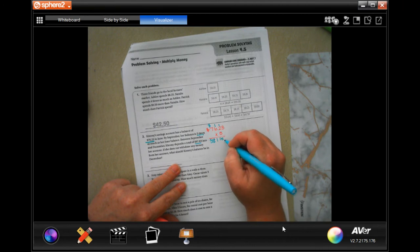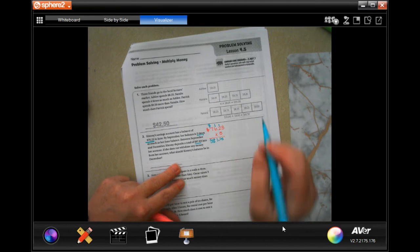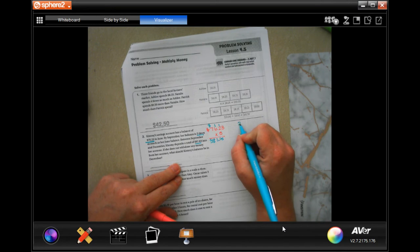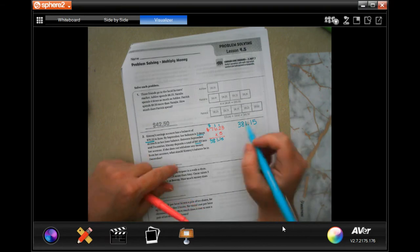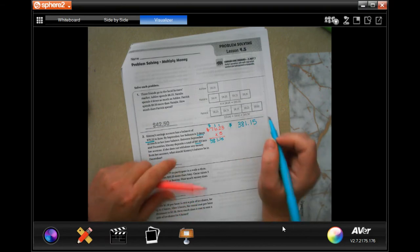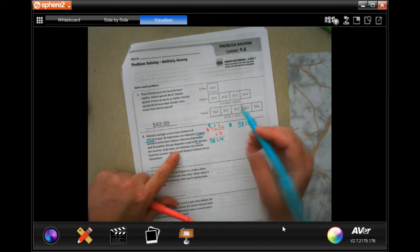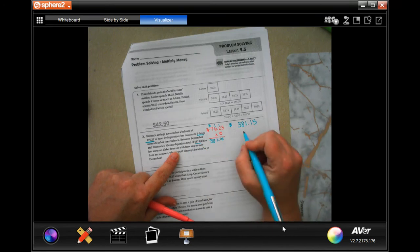So currently her balance in September would be $381.15. But it says then she deposits $87.83.